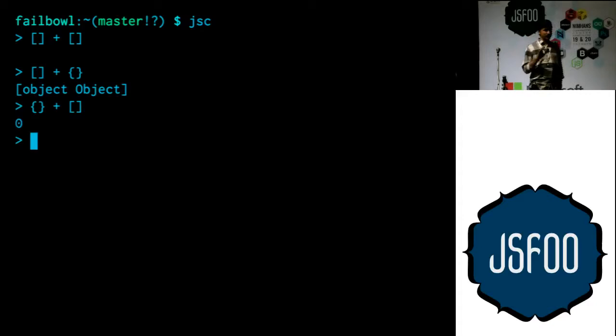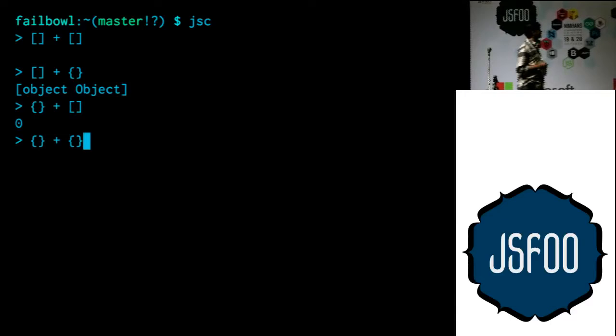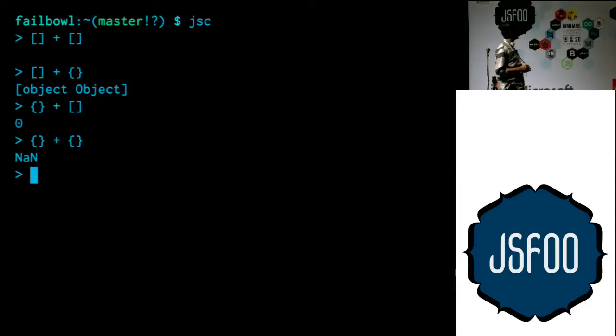All the mathematical computation rules apply. And finally, the only one of these that's actually true: you add arrays, you get empty string — that doesn't make sense. But an object plus an object is actually not a number, technically. Which is true — it's not a number. So this one's actually right.